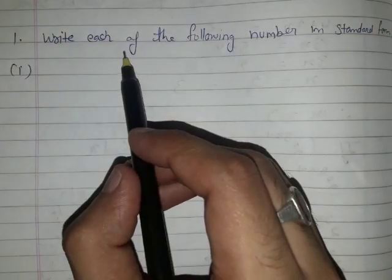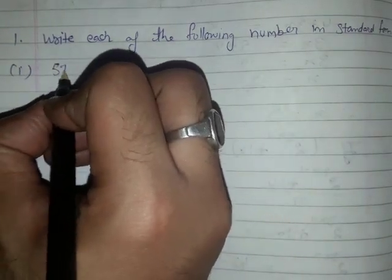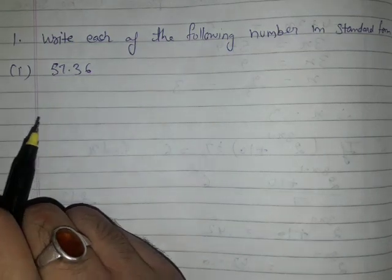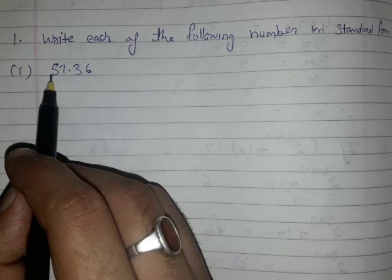Question number one: write each of the following number in standard form. The first part is 57.36. Now you have to convert this 57.36 into its standard form, so the value of M must lie between 1 and 9.99.